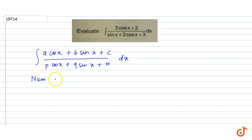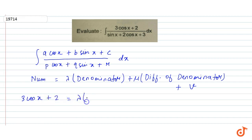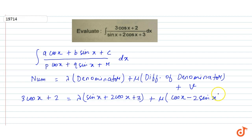Whenever we get an integral of this form, what we do is replace the numerator with lambda times the denominator, plus nu times the differentiation of the denominator. So the numerator is 3cos x + 2, and that equals lambda times (sin x + 2cos x + 3) plus nu times the differentiation of the denominator, which gives cos x minus 2sin x.